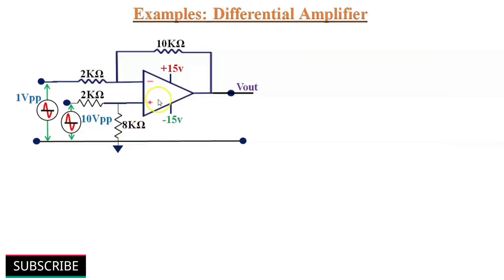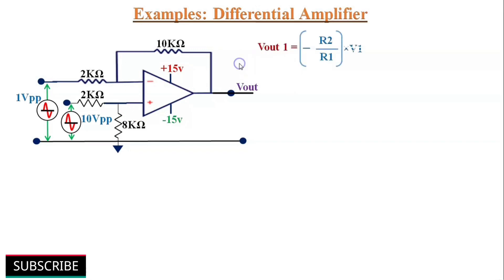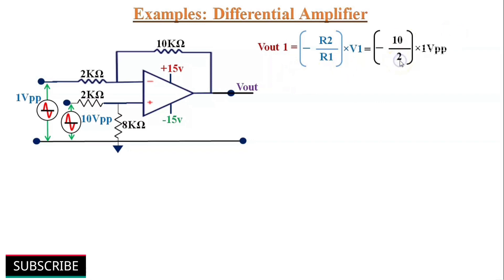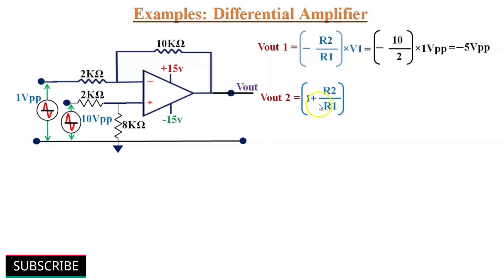Now we will discuss some examples. Find the output voltage for the differential amplifier circuit when V1 = 1 V peak-to-peak and V2 = 10 V peak-to-peak. First, consider V1 acting alone with V2 at ground — the circuit becomes an inverting configuration. Vout1 = −(R2/R1) × V1 = −(10 kΩ / 2 kΩ) × 1 V = −5 V peak-to-peak. Now consider V2 acting alone with V1 at ground — the circuit becomes a non-inverting configuration. Vout2 = (1 + R2/R1) × V⁺.